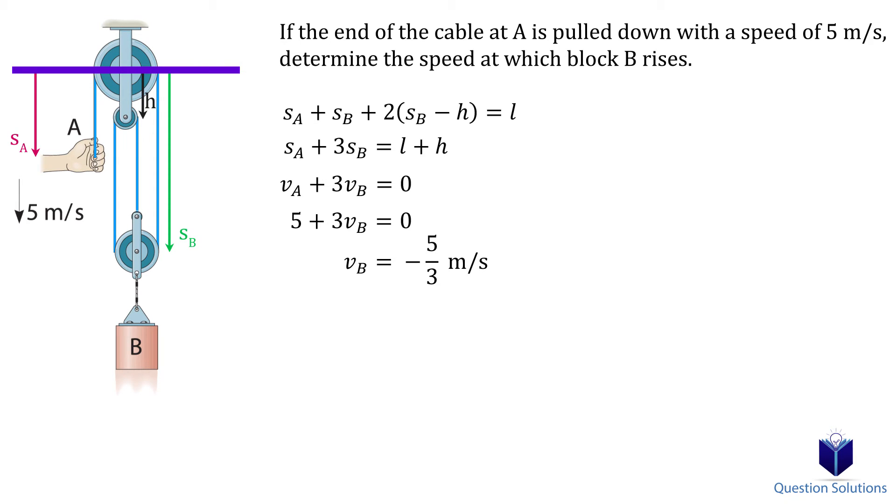We get negative 5 over 3 meters per second, which means the block is going against the direction we drew SB from. In other words, the block is traveling upwards.